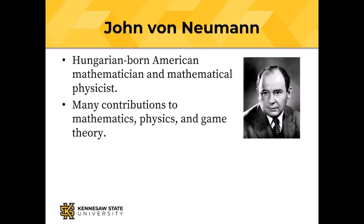Somebody once gave him the problem of the two colliding trains and the fly flying between them — how far does the fly travel before the trains collide and crush it? He answered that instantly, and the person who gave him the riddle said most mathematicians try to do that the hard way. Von Neumann said, 'What's the easy way?'